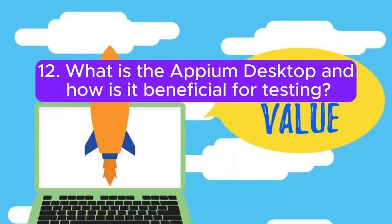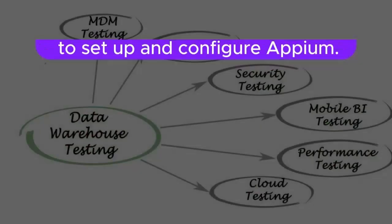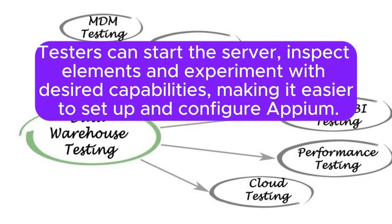12. What is the Appium Desktop and how is it beneficial for testing? Appium Desktop is a graphical user interface tool that provides a visual representation of the Appium server. Testers can start the server, inspect elements, and experiment with desired capabilities, making it easier to set up and configure Appium.